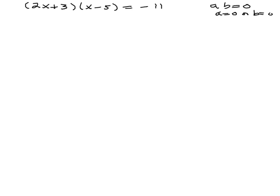Our only choice is to multiply out the left side. So we get 2x squared minus 10x plus 3x minus 15 equals negative 11.